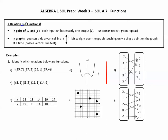A relation is a function if, in pairs of x and y, each input, or x, has exactly one output, or y. In other words, x cannot repeat, while y can repeat. In graphs, you can slide a vertical line left to right over the graph, touching only a single point on the graph at a time — this passes the vertical line test.